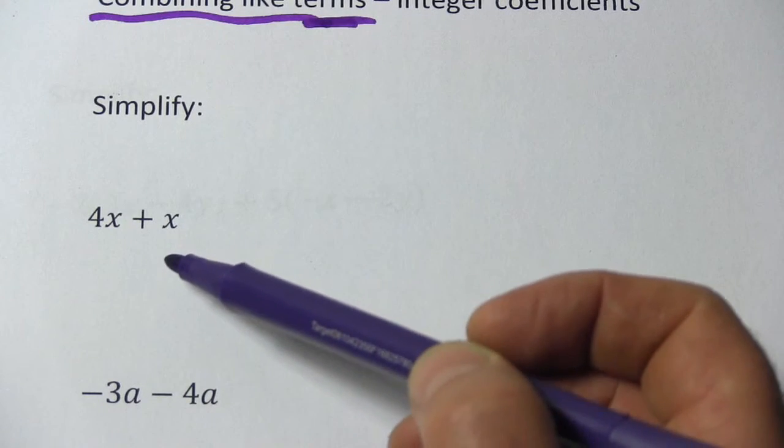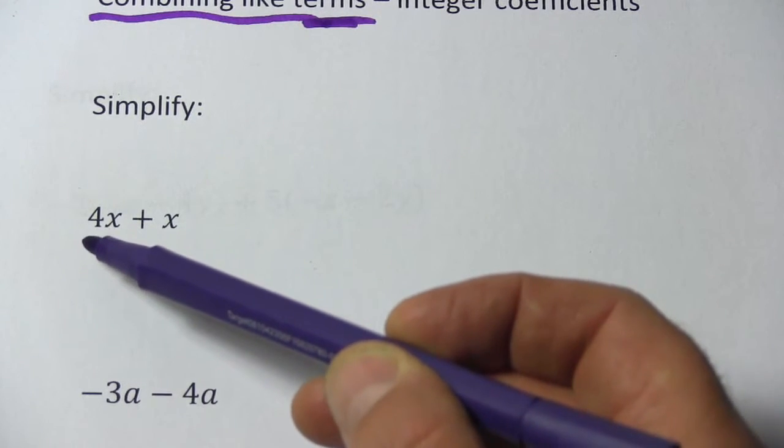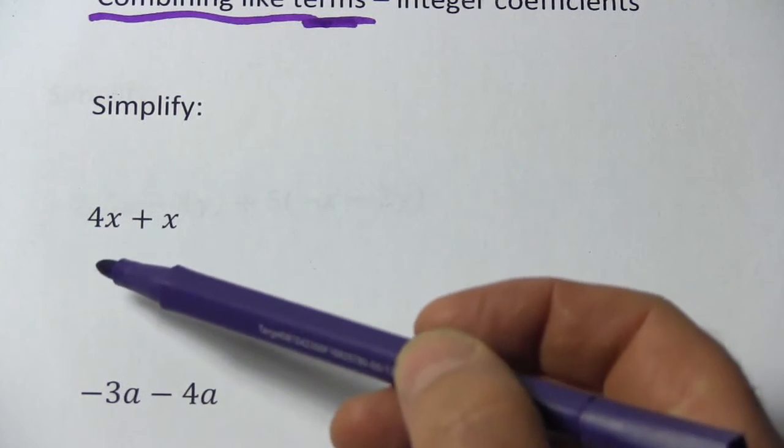And in this first one, 4x plus x, we have two x terms. So this term has x as a variable and this term has x as a variable. That means we can combine them. We can add them together.